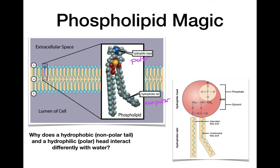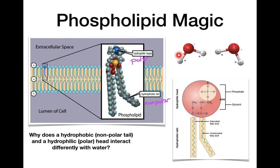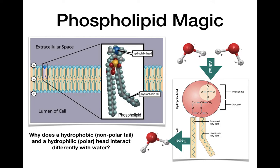So why does a hydrophobic or nonpolar tail and a hydrophilic or polar head — how do they interact in water? Let's talk about attractions and repulsions. You can see that the water molecules are going to be attracted to the polar head and repelled from the tail. This attraction and repulsion is what creates the membrane — it's this difference in attractions and repulsions.